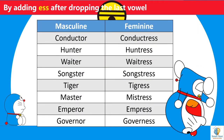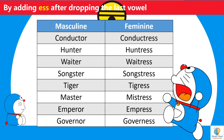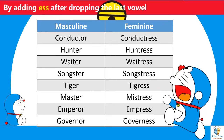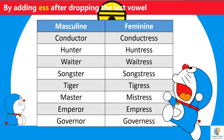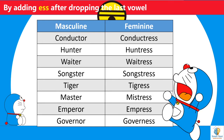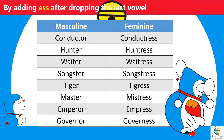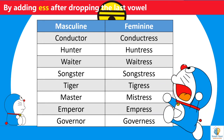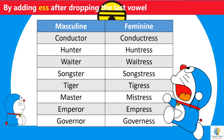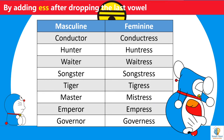Examples of masculine and feminine gender by adding -ESS after dropping the last vowel: conductor/conductress, hunter/huntress, waiter/waitress, songster/songstress, tiger/tigress, master/mistress, emperor/empress, governor/governess.